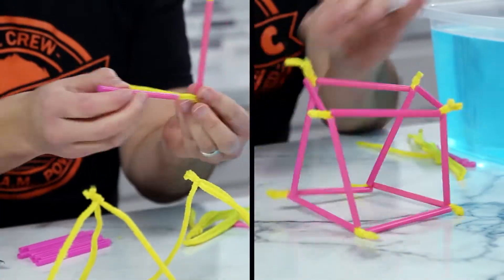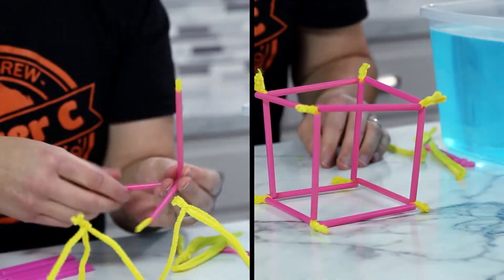Look at this cube. It has height, width, and depth. It's three-dimensional.